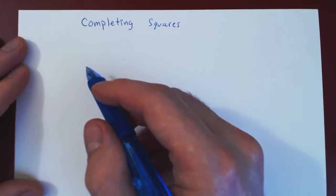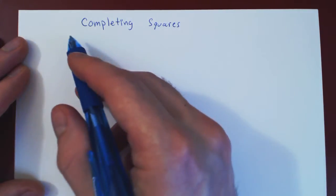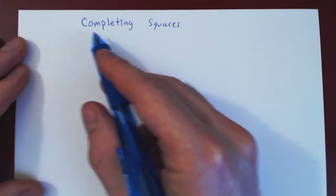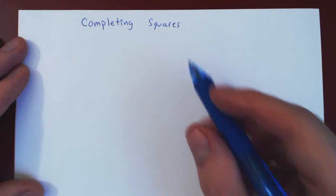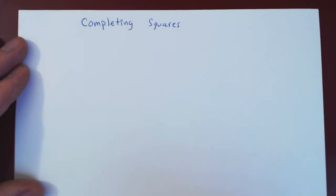In this video we will discuss the idea of completing squares, which is simply to remove the linear factor in a quadratic polynomial. Let's go through a few examples.